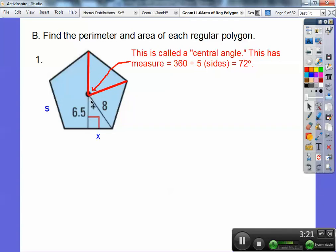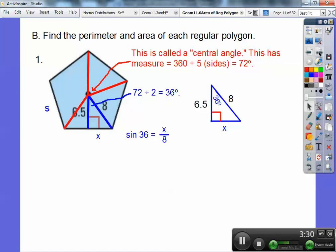Now, so this angle right here is half of that. It's going to be 36 degrees. So now, do you see this right triangle that I pulled out of here? Here's that 36 right here. Here's the 6.5. Here's the 8. Now, I can use the Pythagorean theorem right here. I chose not to because most cases you can't. But I could have used the Pythagorean theorem to find x.